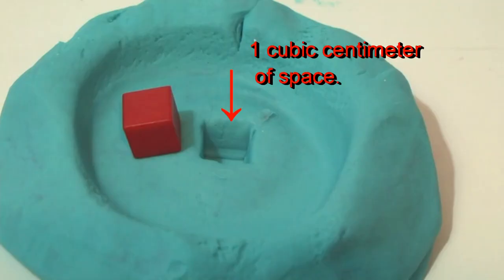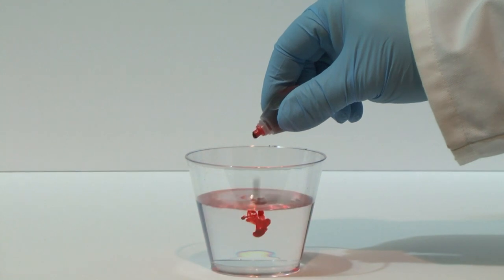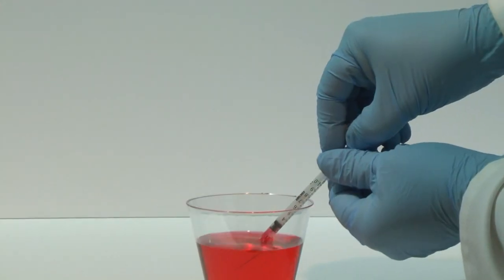The impression left in the Play-Doh would be a space with a volume of one cubic centimeter. Therefore, one cc of liquid should fill this space completely. To check this out, let's put a little food coloring in water and fill the syringe with one cc of the red liquid.